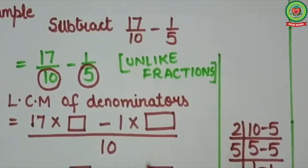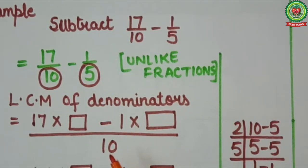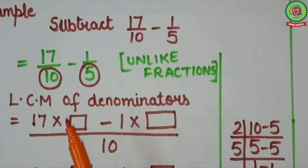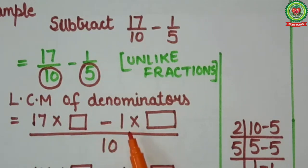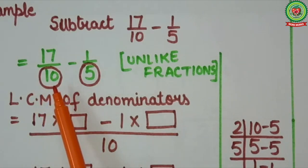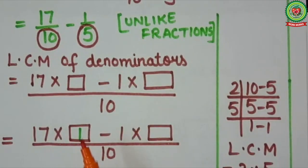Step 3: convert these fractions into like fractions. For that we need a common denominator. Here LCM is 10, therefore common denominator equals to 10. Multiply numerators with suitable numbers so that denominators become equivalent to 10. We write 17 into box minus 1 into box upon 10. See first fraction — denominator is 10. In table of 10, 10 will come at 1. So in the first bracket I will put 1.